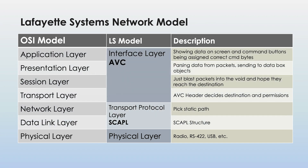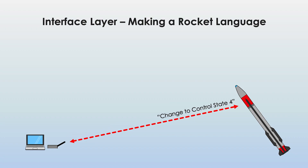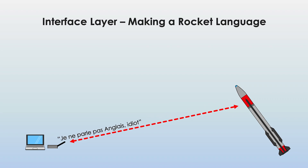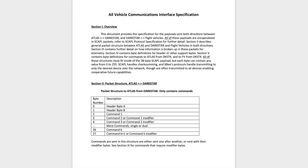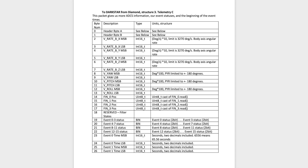First let's look at the interface layer. This is basically like a rocket language. You can't just scream at a rocket in English and have it do something, so we need to invent a language that the rocket can speak and then make sure that your ground control software is speaking that same language. Now the cool thing is that you can just make this language up — it can be whatever you want. The language my rockets speak is called AVC, or All Vehicle Communications. In practice this is a really big word document that lists what all the commands are and what all the payload structures are, so I can make sure those are standardized across all the different systems of the network.